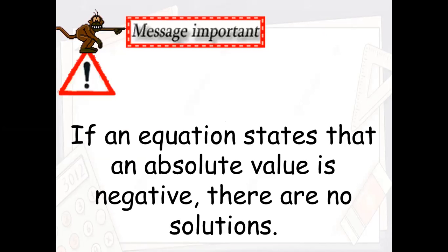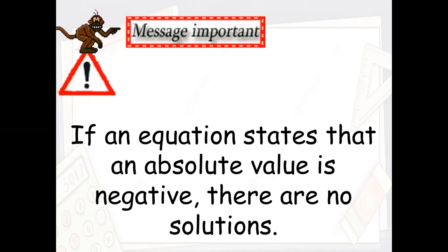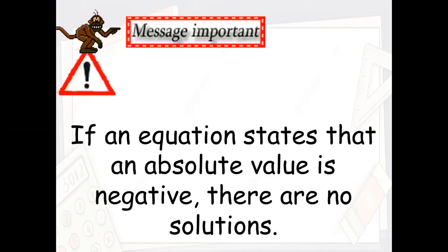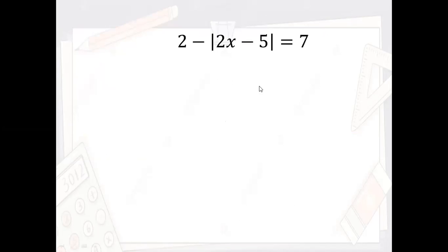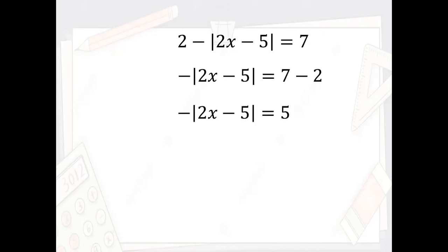Here's the next important message: if an equation states that an absolute value is negative, there are no solutions. If an absolute value equals a negative number, there are no solutions. For this equation, you move the two to the other side — seven minus two gives you negative two — so negative two times the absolute value of x minus five equals five.